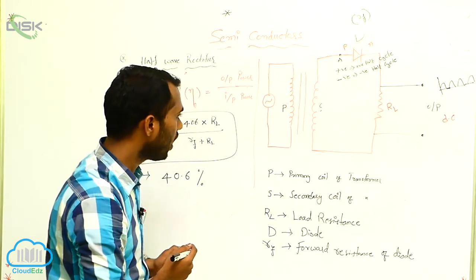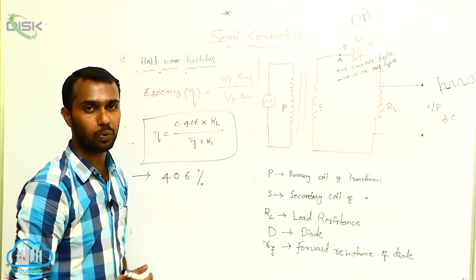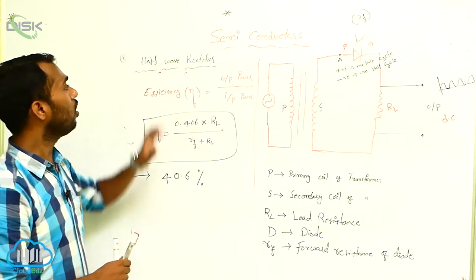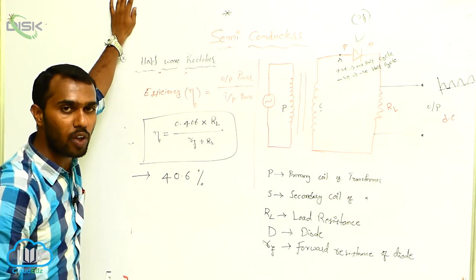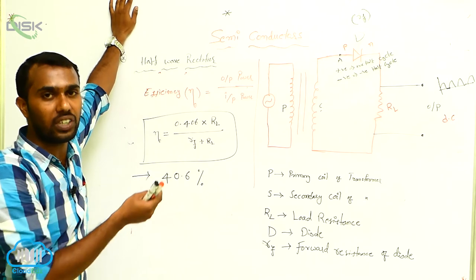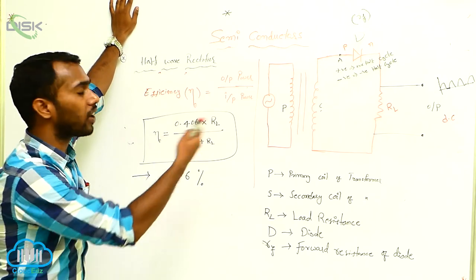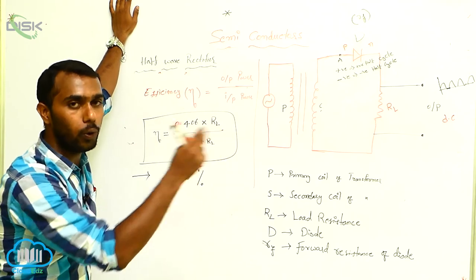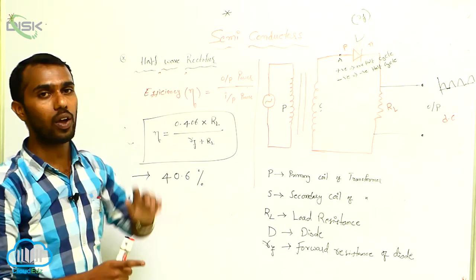That's why we have another rectifier — its name is full wave rectifier. In full wave rectifier, we have more efficiency; more percentage of AC can be converted into DC. That is the full wave rectifier.